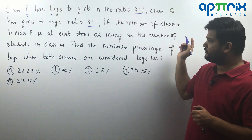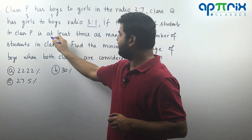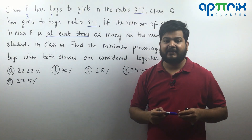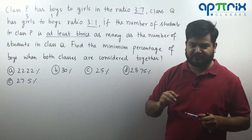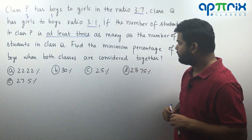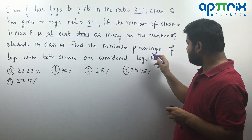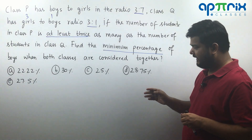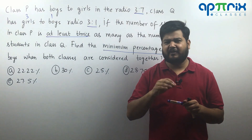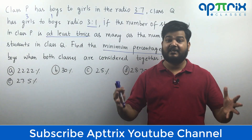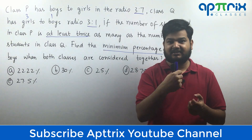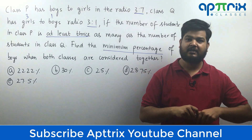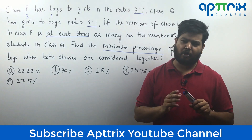Now the question says that the number of students in class P is at least thrice the number of students in class Q — meaning class P will have a minimum of 3 times the number of students compared to class Q. We are asked to find the minimum percentage of boys when both classes are considered together. This is a wonderful question and students often get confused, but you can solve it very easily using common sense.